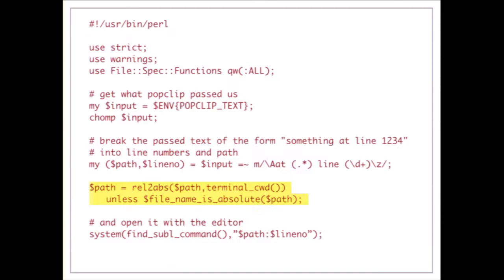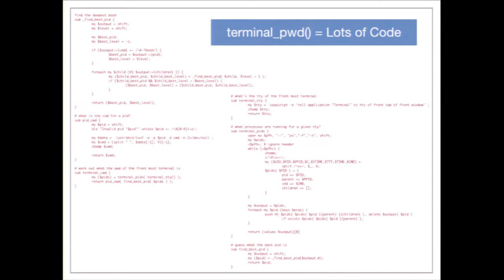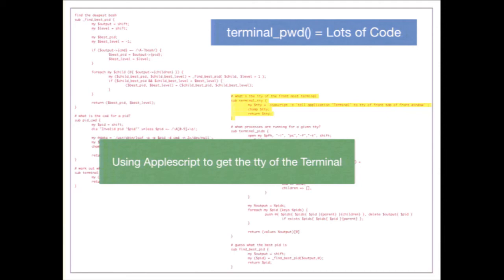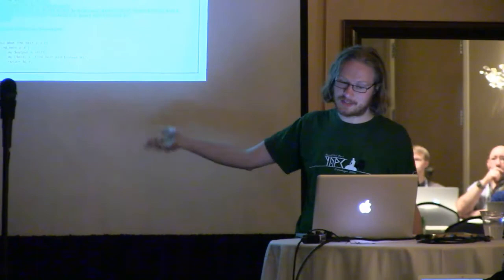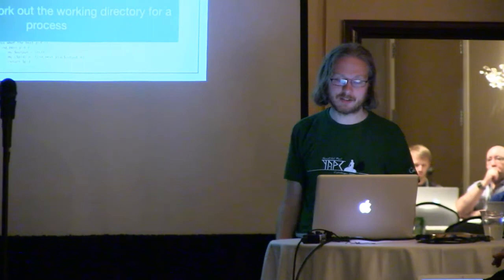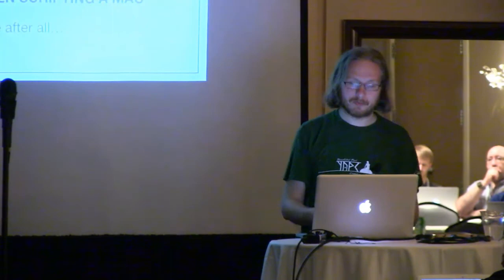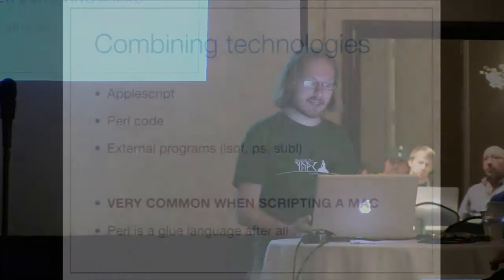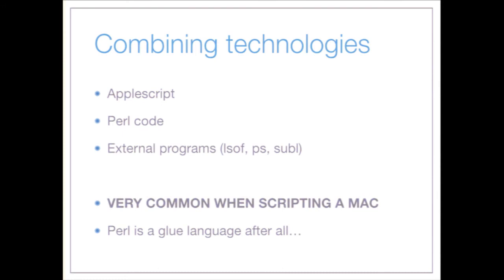Here's the problem: broken.pl is inside my temp directory but the selected text doesn't tell me that — I need to know the current working directory of my terminal. There's a terminal_cwd function I wrote with quite a lot of code. At a high level: there's AppleScript run via the osascript shell command to look at my terminal and find the TTY; then I run ps to extract relevant info for that TTY; then Perl code ties it together; then lsof works out the working directory for that process. I've used AppleScript, Perl, and external programs — typical for Mac scripting. Perl is a glue language after all.